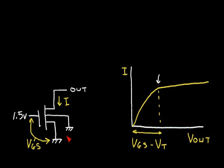...is the voltage gate-to-source minus the threshold voltage — the voltage at which this channel in this transistor is just getting pinched off. The electric field at the drain side is just enough to be at the transistor threshold and put us into this particular region.